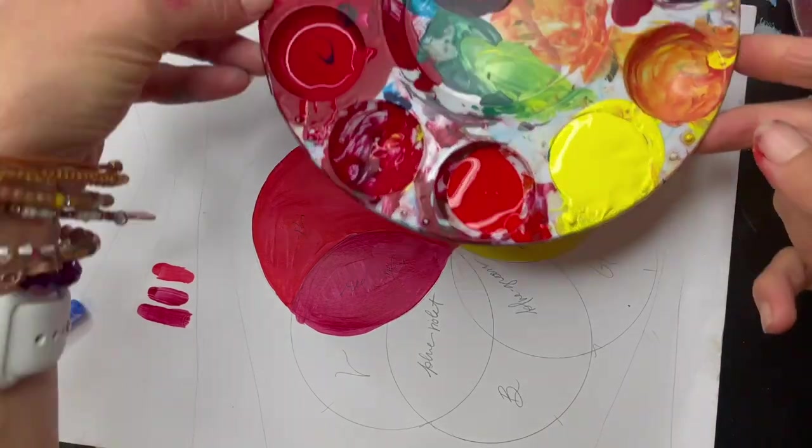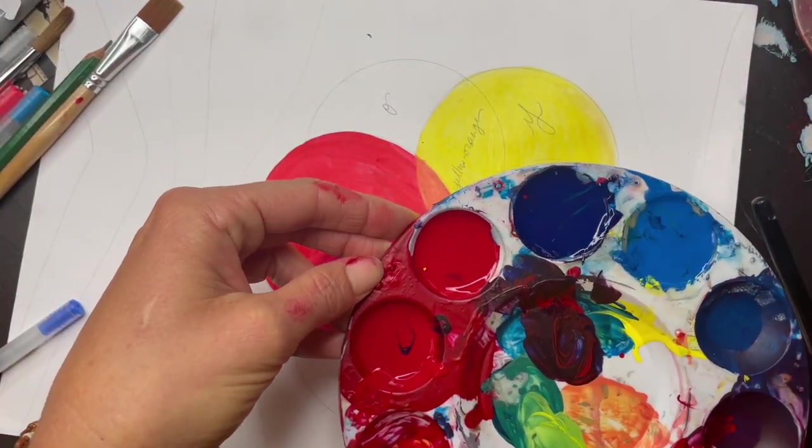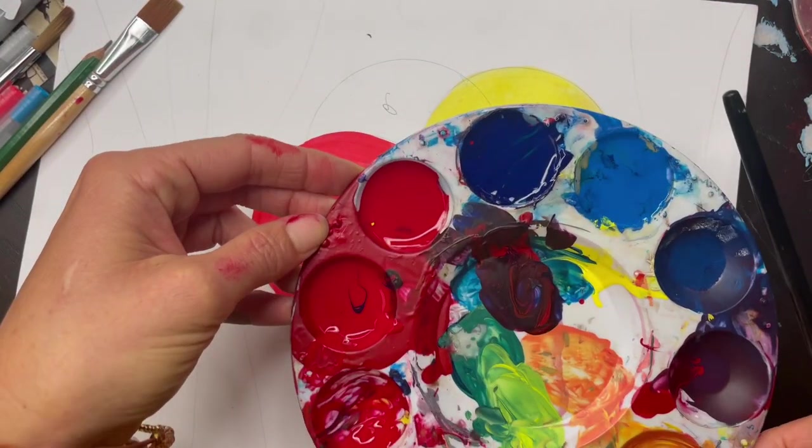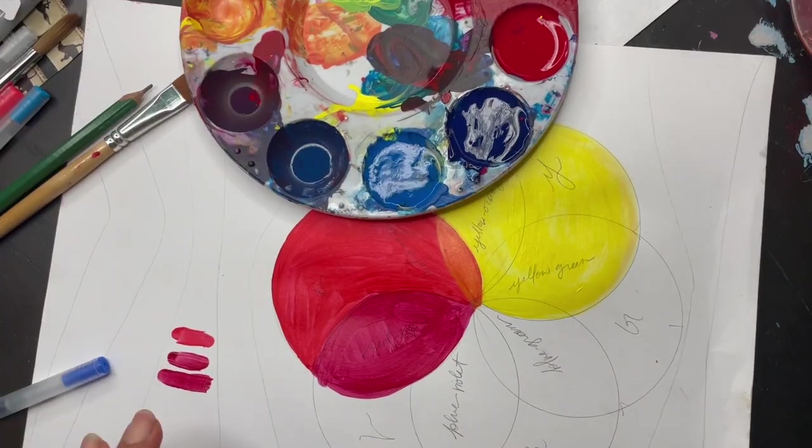Okay, now we're ready to start mixing our secondary colors. Choosing from your more bright red, or fire engine red, we're ready to go for orange. Red is a far stronger color than yellow, so you're going to need a lot less of it. Start small. A little bit goes a long way.